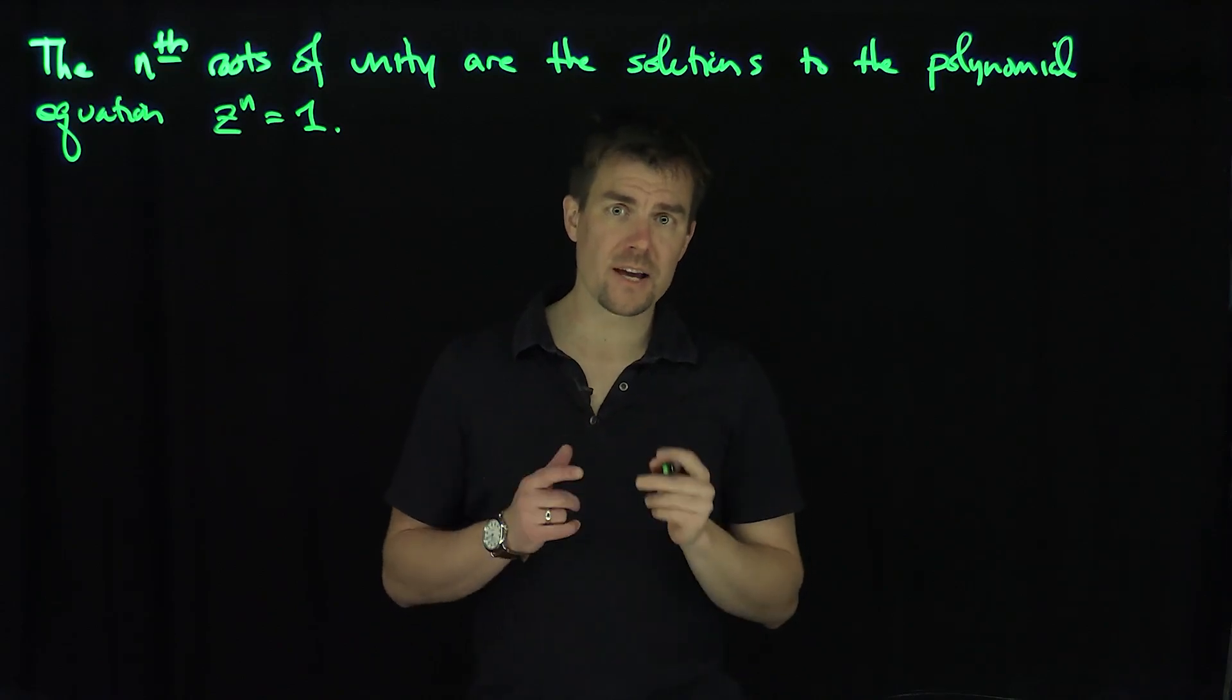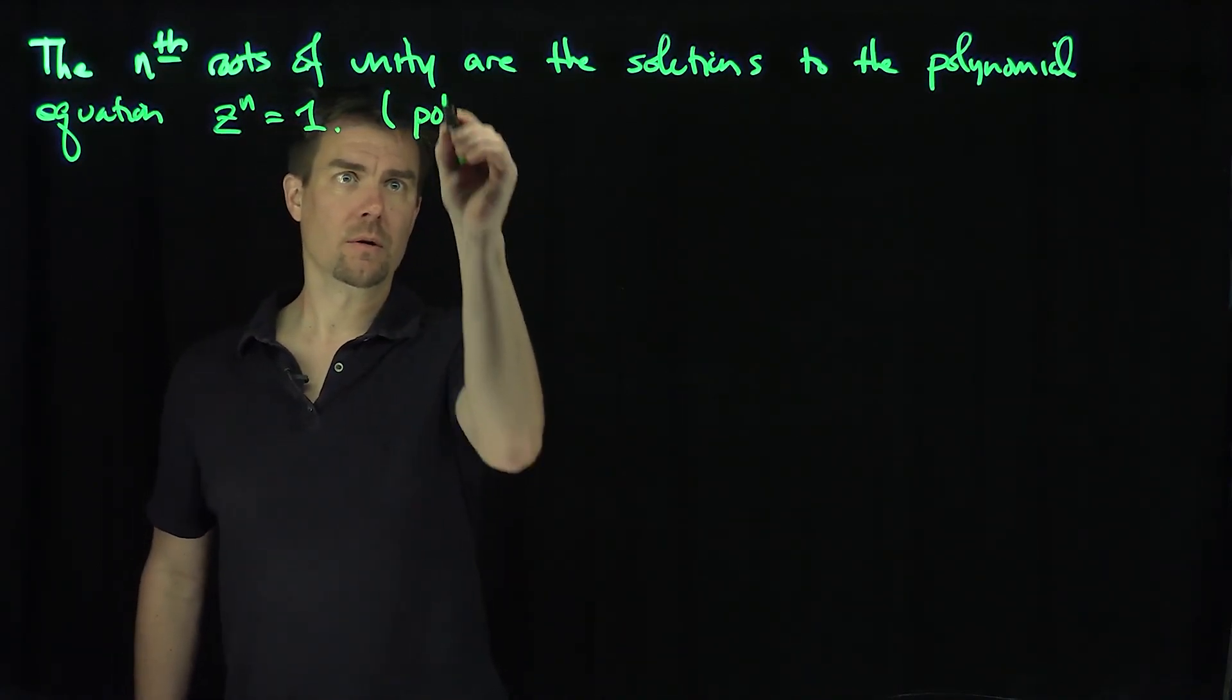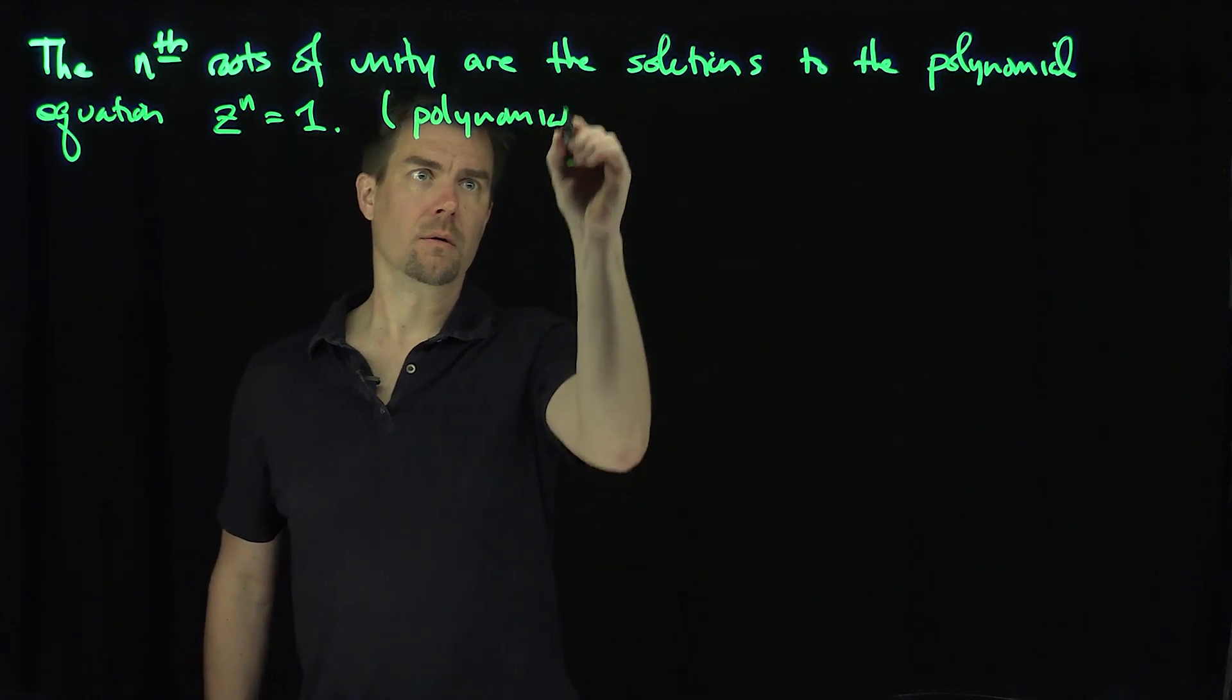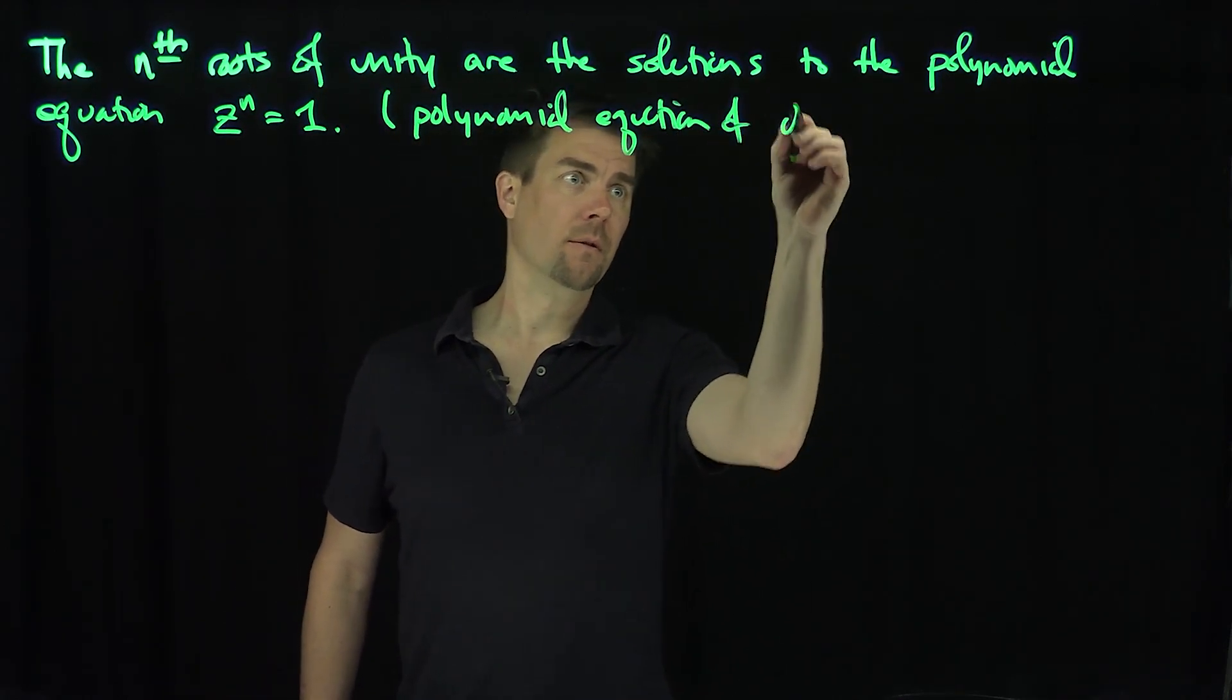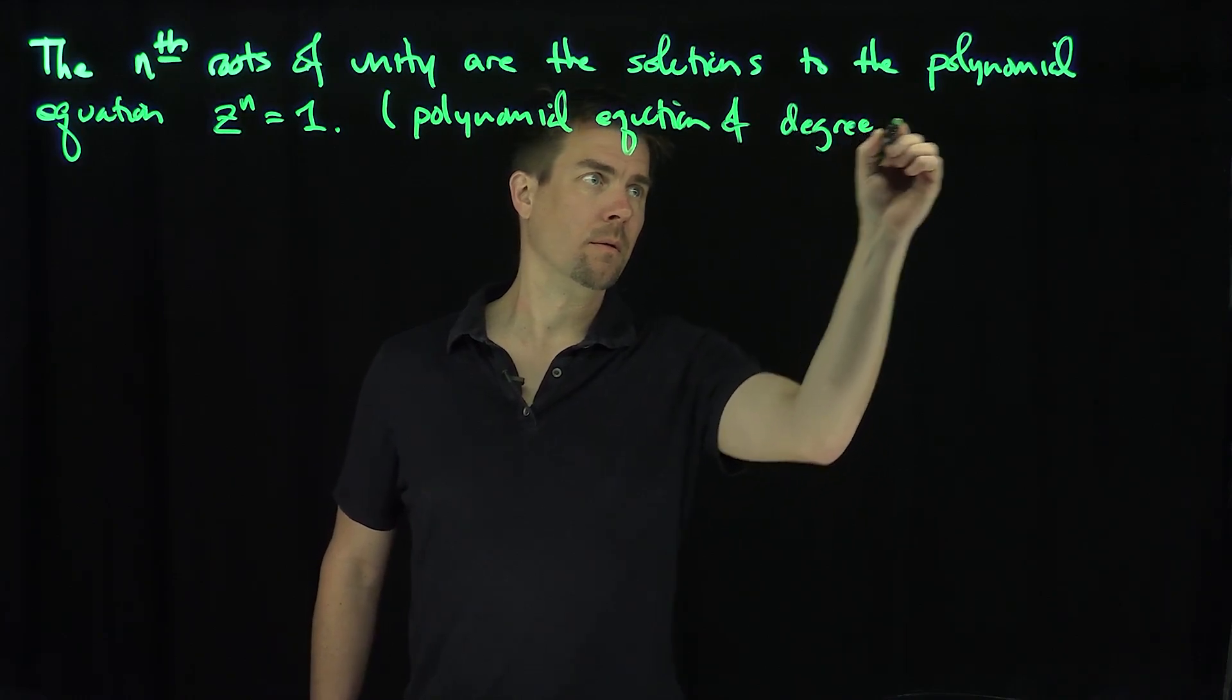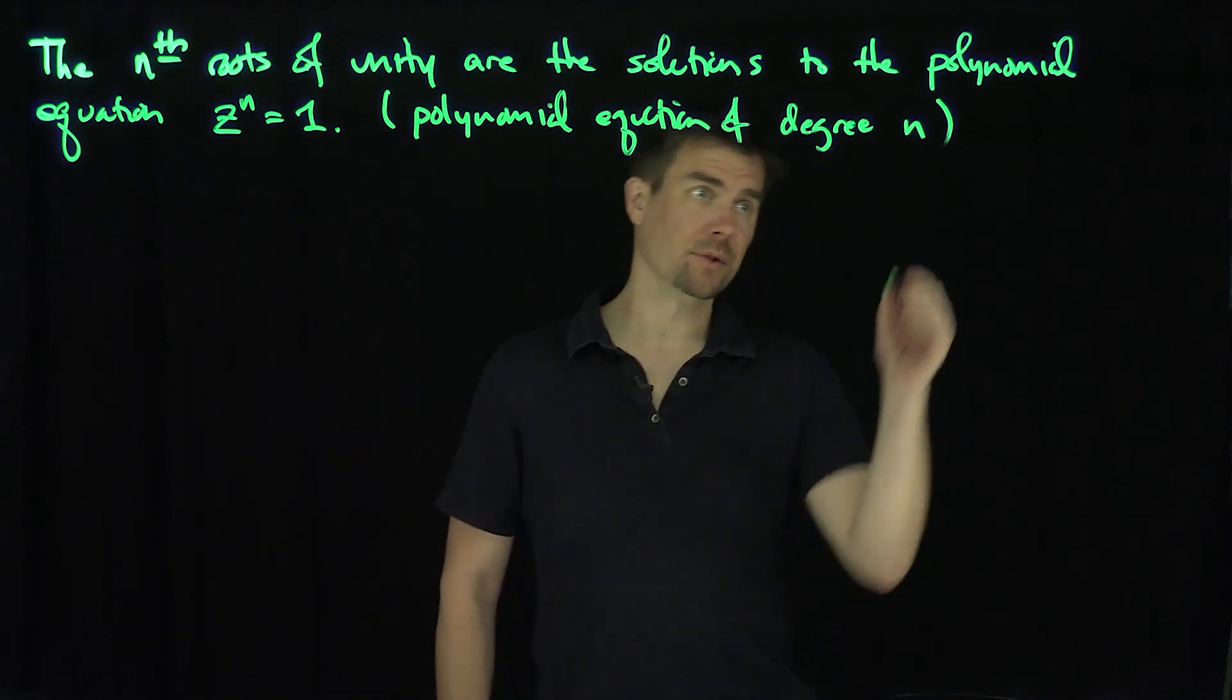Now we know that z to the n equals 1 is a polynomial equation of degree n. And we know by the fundamental theorem of algebra there are exactly n solutions to this with optimal multiplicity.